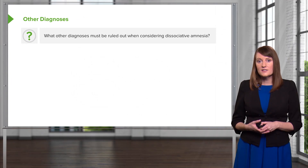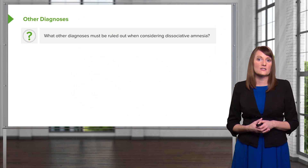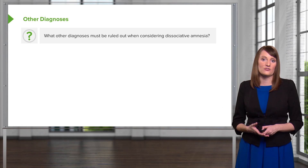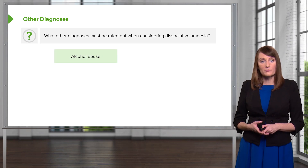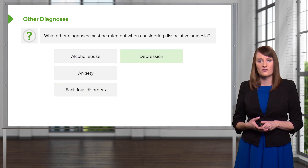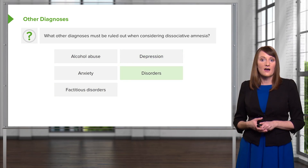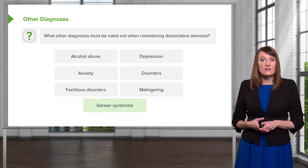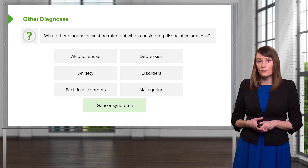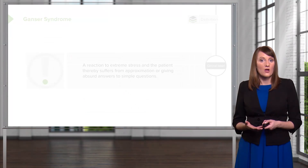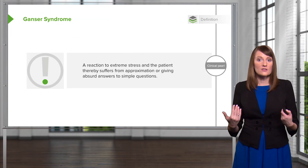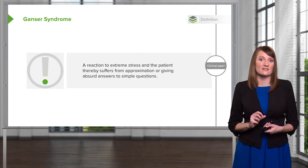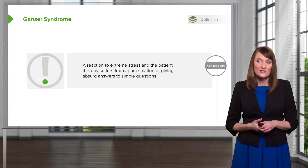Other diagnoses to rule out when considering dissociative amnesia include alcohol abuse, anxiety, factitious disorders, depression, other general medical disorders, and malingering. Also, there's something called Ganser syndrome, which you'll want to rule out. Ganser syndrome is a reaction to extreme stress where the patient gives approximations of answers, or absurd answers that make absolutely no sense.